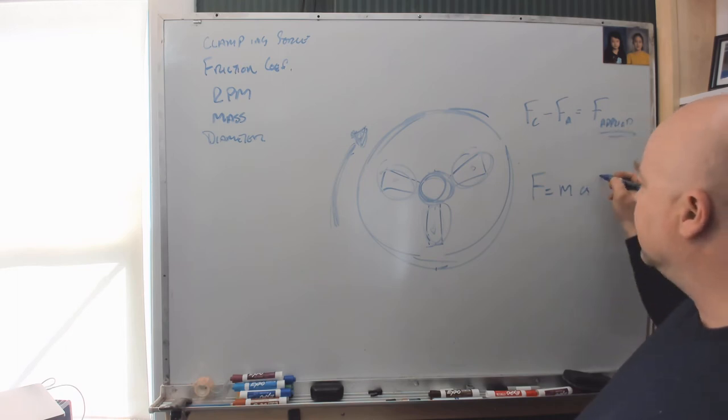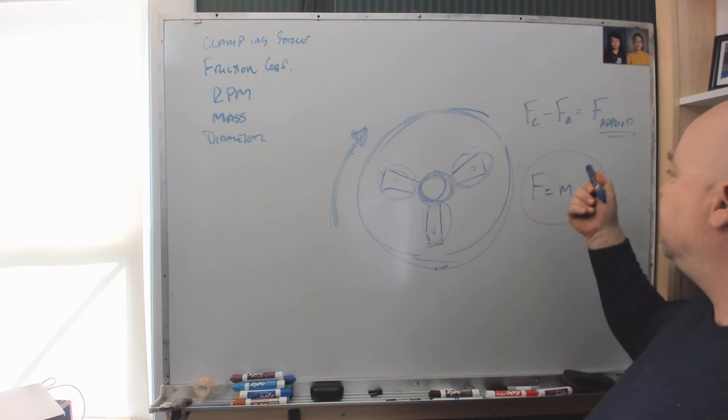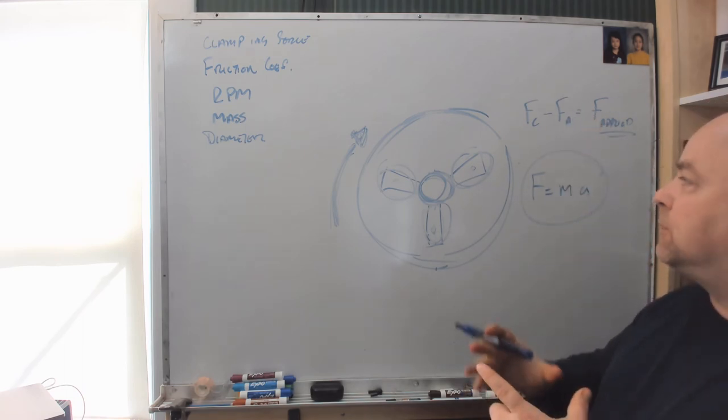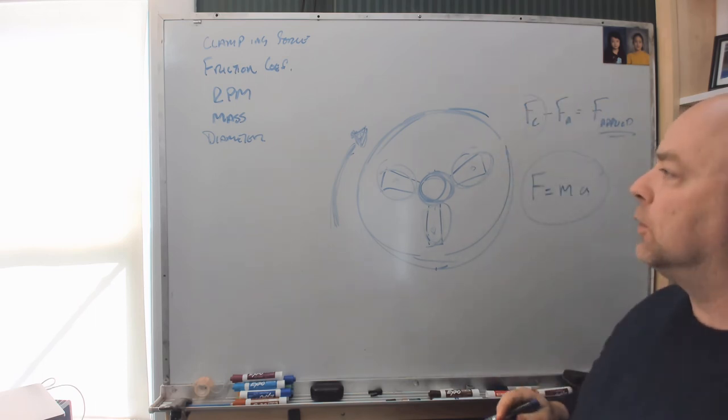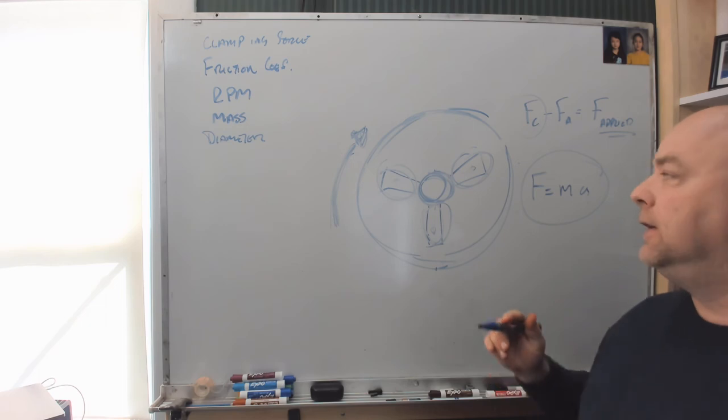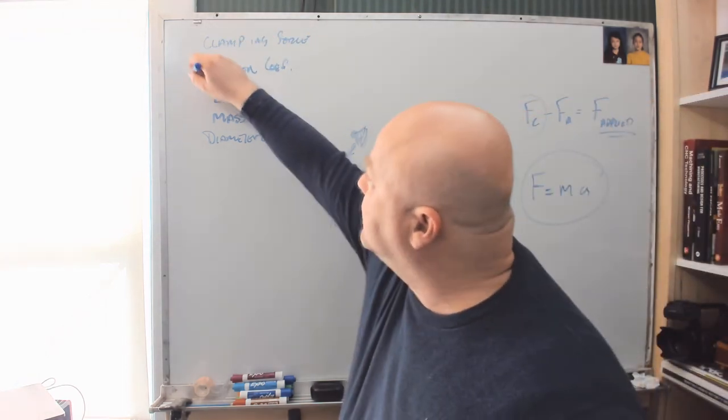What you need to do is figure out how much force is from the centripetal acceleration, subtract that from the clamping force, and that will tell you how much effective clamping force you have. If you know the effective clamping force and the friction coefficient,